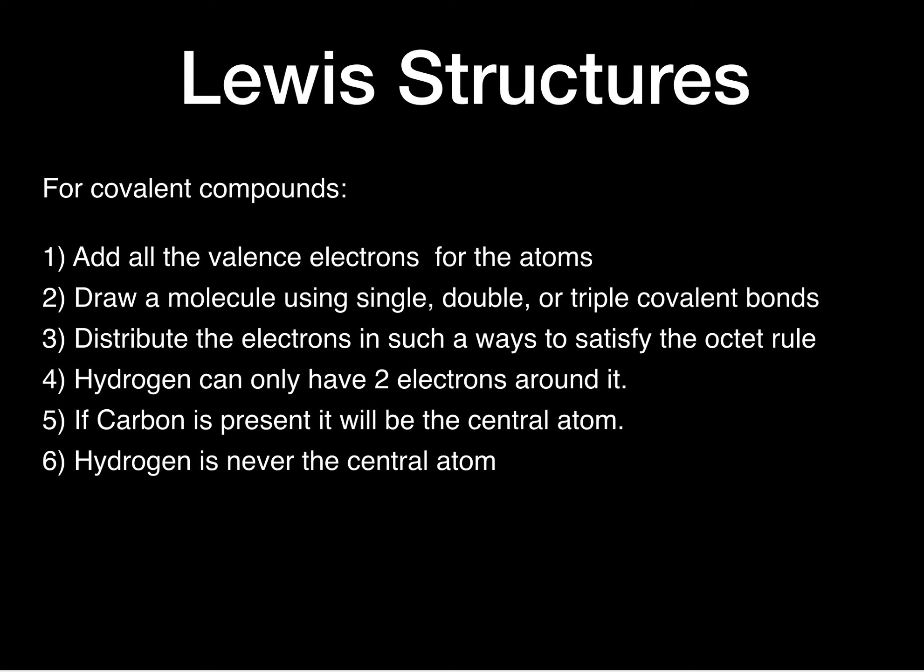Here are our rules for creating Lewis structures for covalent compounds. First, we need to add all of our valence electrons together for all the atoms in our compound. Then we're going to draw a molecule using single, double, or triple covalent bonds. Usually start off with a single bond and then fill in your lone pairs and check your work. Number three, distribute the electrons to satisfy the octet rule — that's when you use your lone pairs.